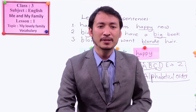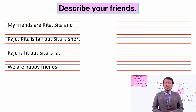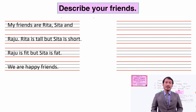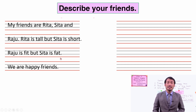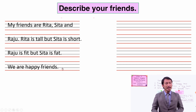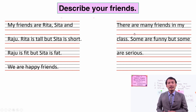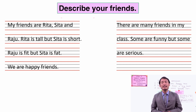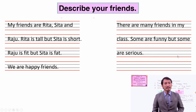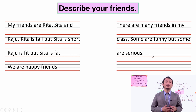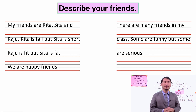I have an example for you. You can start your sentence like this: 'My friends are Rita, Sita, and Raju. Rita is tall but Sita is short. Raju is fit but Sita is fat. We are happy friends.' Another way — you can also say, 'There are many friends in my class. Some are funny but some are serious.' You can now describe who are serious, who are funny, who are calm, who are tall, who are short. Likewise, you can go on describing your friends.